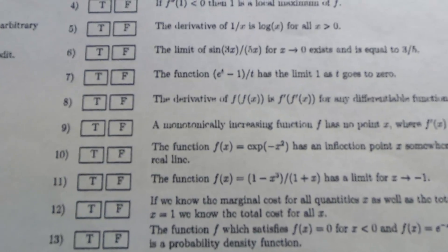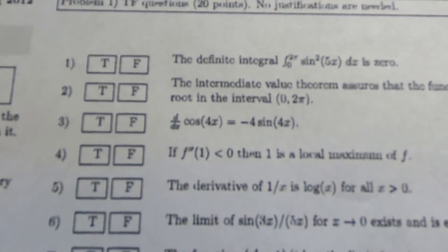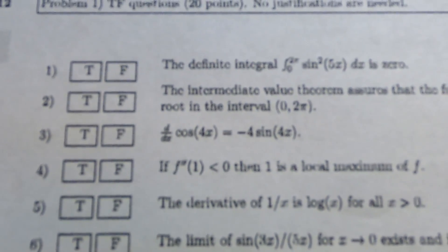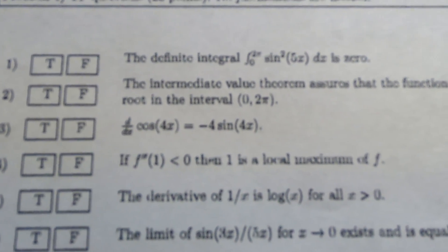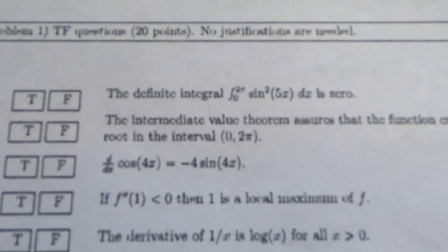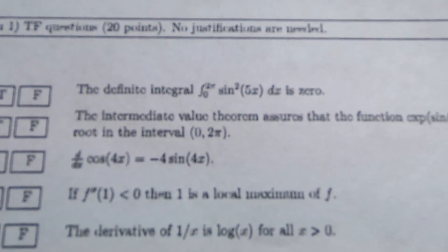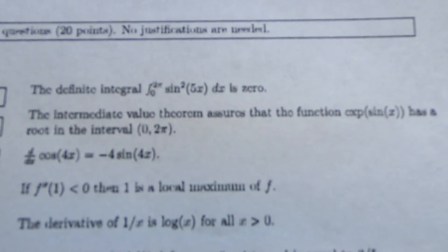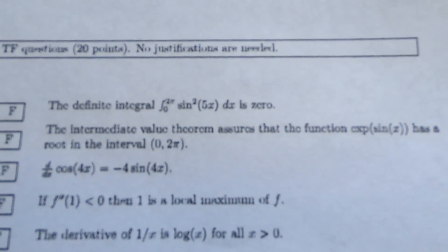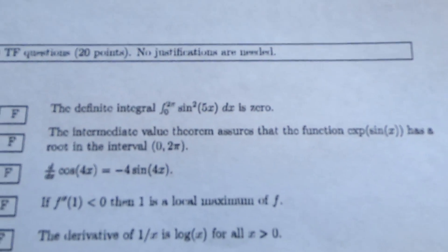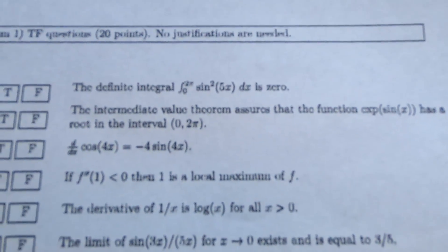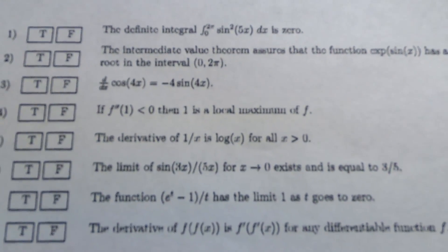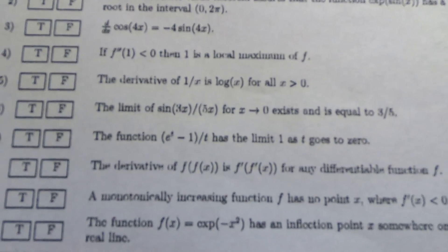Now, that being said, they are not completely insane multiple choice questions. For example, look at the third one there. The derivative of cosine of 4x is equal to negative 4 times the sine of 4x. Yep. That's just the chain rule. Look at the second one. The intermediate value theorem assures that the function e to the sine x has a root in the interval 0 to pi. That's impossible because e to the x is always positive. So you can just look at it and say false. So you can go through this quite easily, and you can make determinations about what you think about each of the questions. True or false.